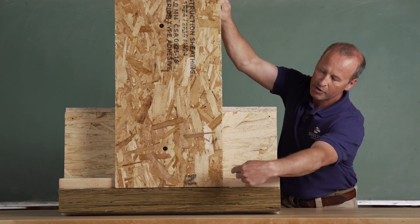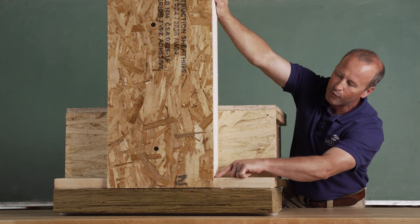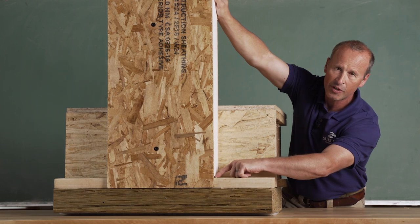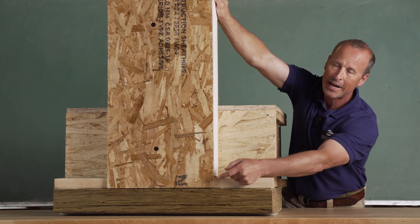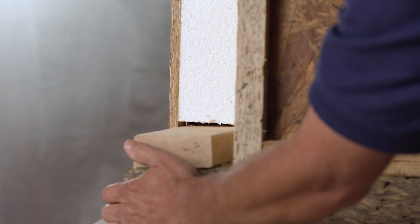One of the last things we do before we leave the job site is drill through this OSB into this minor void on top of the shoe and fill that with expanding foam to make sure that no air is leaking into the building down here at the vulnerable sill plate.